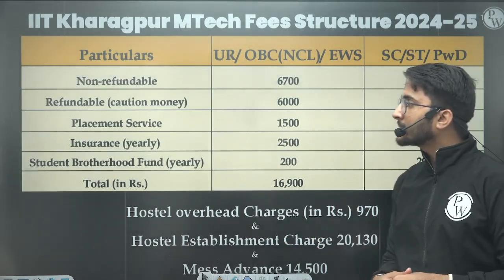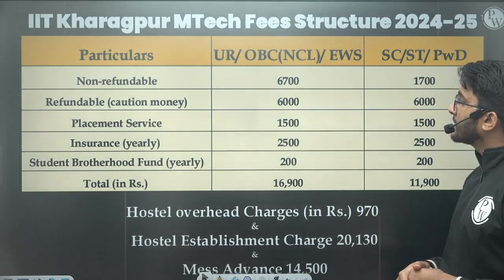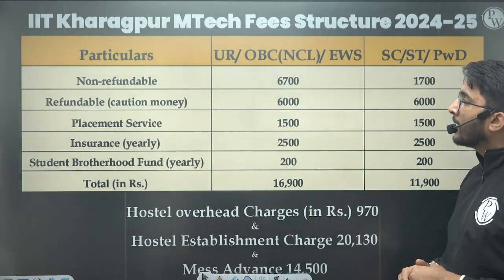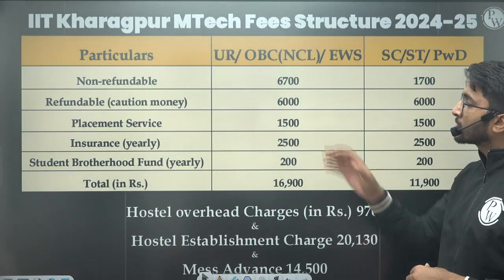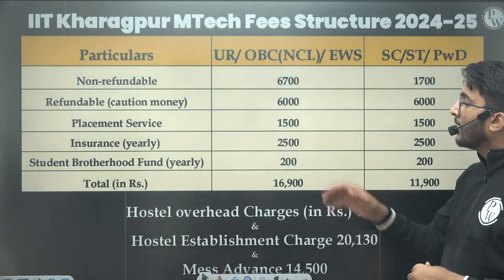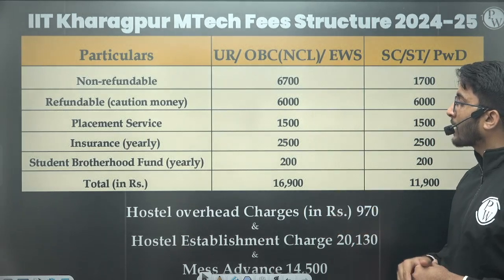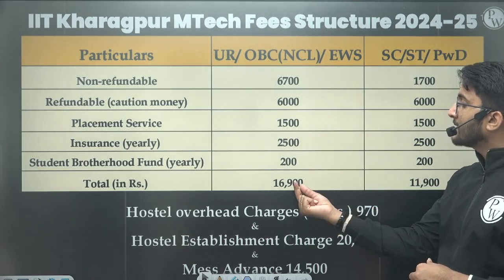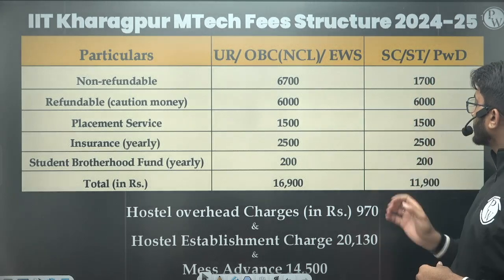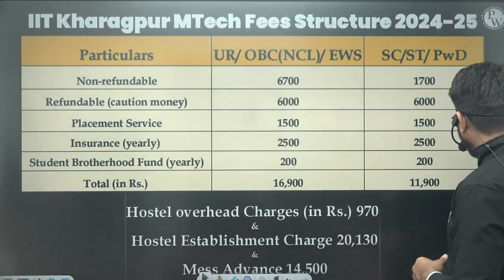For IIT Kharagpur, ₹6,700 is your non-refundable amount, the refundable amount is ₹6,000, placement service is ₹1,500, insurance is ₹2,500, and other charges are also there. So the total application and related fees is ₹16,900 for General category, and ₹11,900 for SC and ST. The hostel charges are also mentioned here, so you need to pay accordingly.